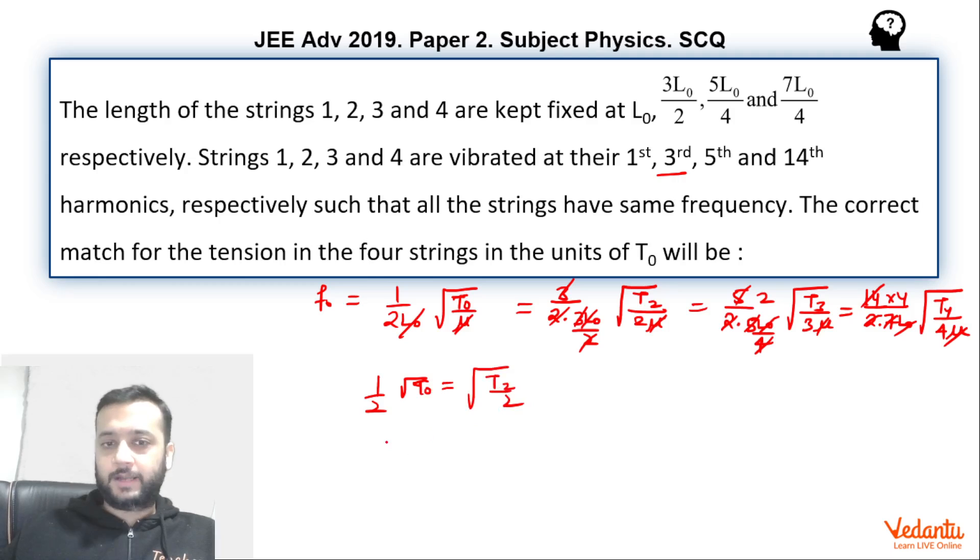We can square this. So we get T0 by 4 into 2 equals T2. That means T2 equals T0 by 2.